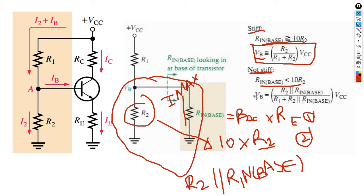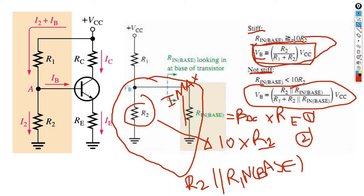You should be able to distinguish between when your circuit is stiff and when it is not stiff. When it's stiff, you calculate V-base using the simple voltage divider formula with R2 over (R1 plus R2) times VCC. When it's not stiff, you calculate V-base using R2 in parallel with R-in-base in the voltage divider formula. Always check if your circuit is stiff or not stiff first.